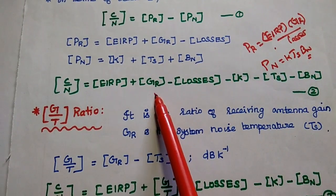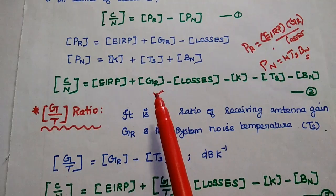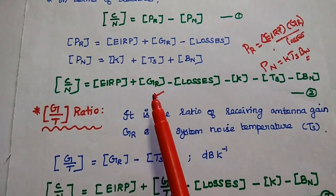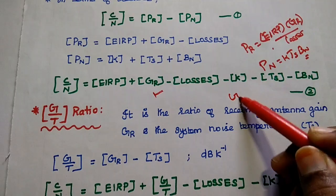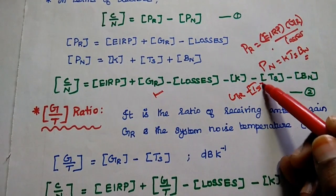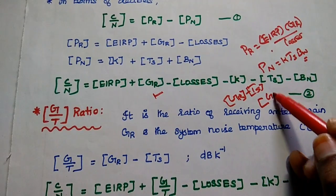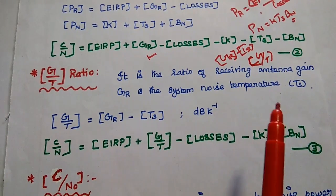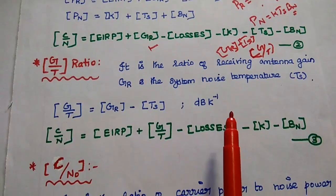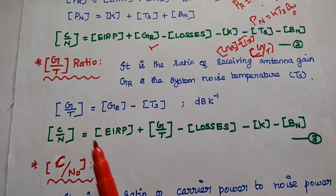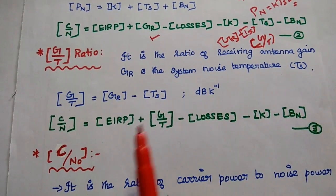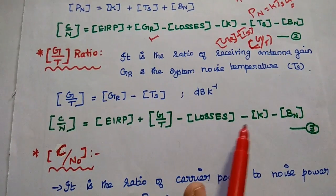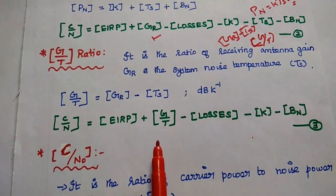In this equation, we can consider two values: the receiving antenna gain at the satellite input side and the system noise temperature. GR minus TS in decibels can be considered as G/T in normal terms. It is the ratio of receiving antenna gain and the system noise temperature. Taking these two terms together as G/T, the second equation can be written as C/N = EIRP + G/T − losses − K − BN. Consider this as the third equation.